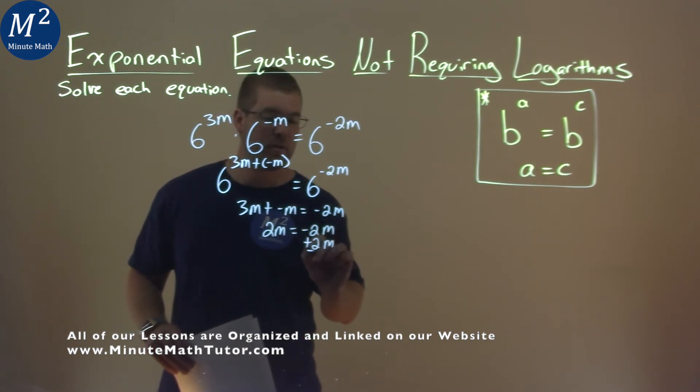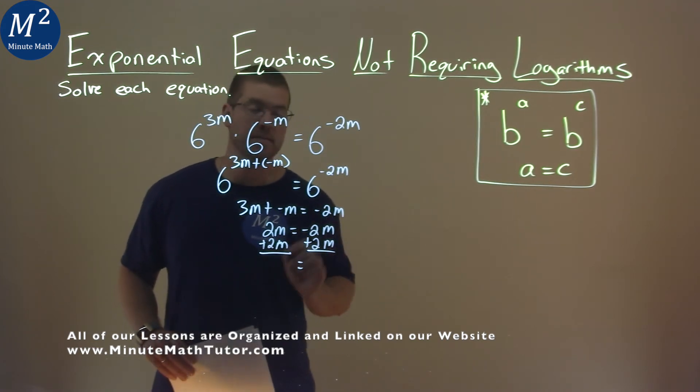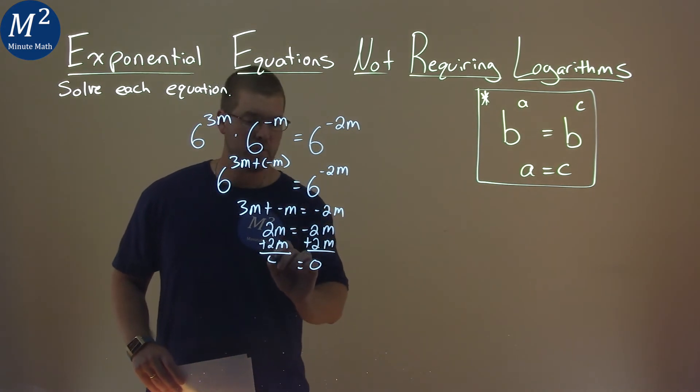I'm going to add a 2m to both sides. The right-hand side is a 0. The left-hand side, 2m plus a 2m is a 4m.